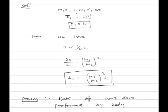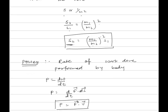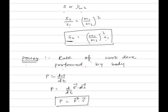Applying conservation of momentum: initial momentum equals final momentum, so p1 equals minus p2, meaning both have the same magnitude but opposite directions. Using s proportional to 1 upon m squared, s2 upon s1 equals (m1 upon m2) whole squared. Therefore the stopping distance of the second cart is s2 equals (m1 upon m2) whole squared into s1. If m1 and m2 are given, substitute values to determine s2.